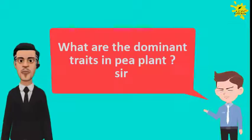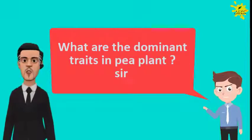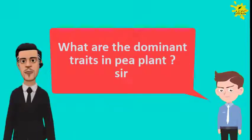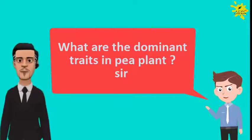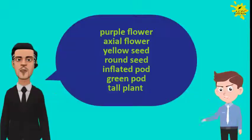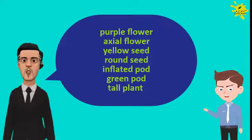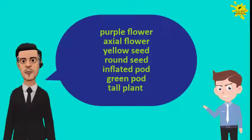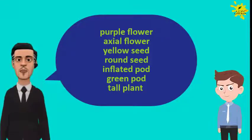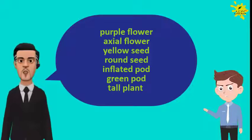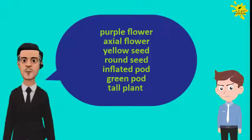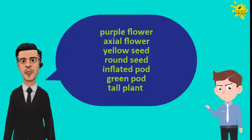What are the dominant traits in pea plant, sir? In pea plant, purple flower, axil flower, yellow seed, round seed, inflated pod, green pod, and tall plant are the characters that are dominant.